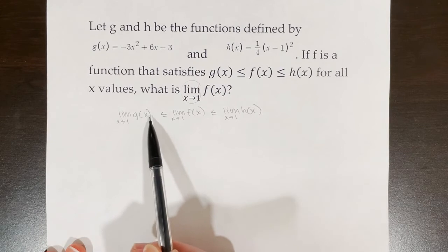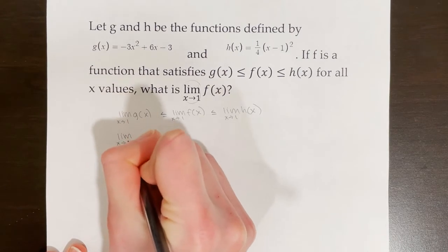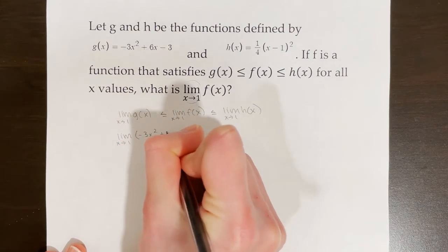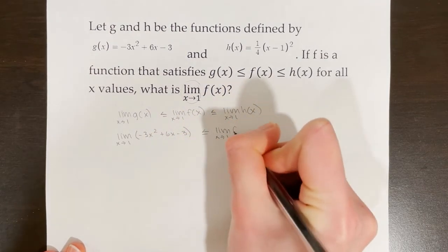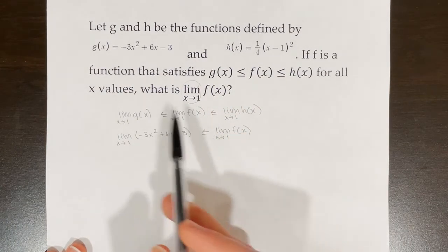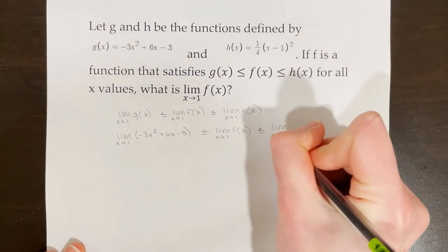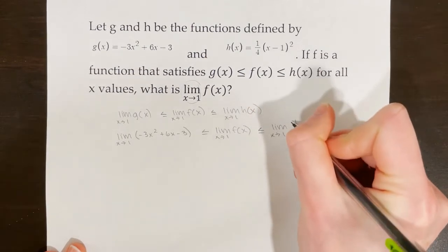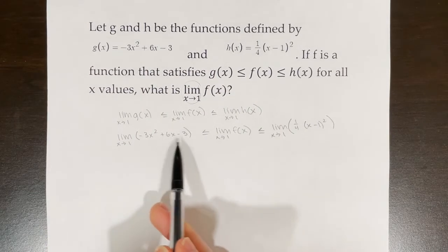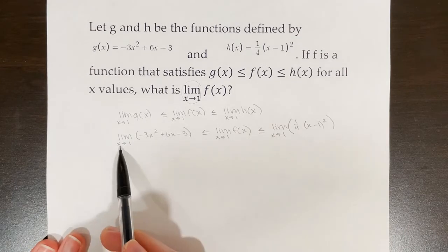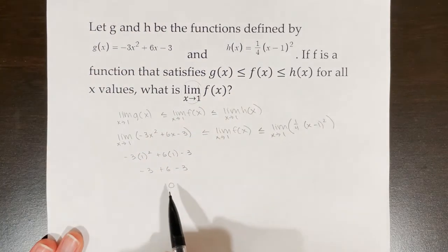Now instead of writing g(x), I'm going to write the actual function given for g(x). This becomes: the limit as x→1 of −3x² + 6x − 3, which is less than or equal to the limit as x→1 of f(x). I'm not writing anything in for f(x) because that's what I'm trying to find. On the right side is the limit as x→1 of ¼(x − 1)². This is a continuous function, so I can use direct substitution — I plug in 1 and simplify to get 0.